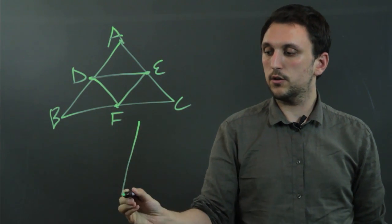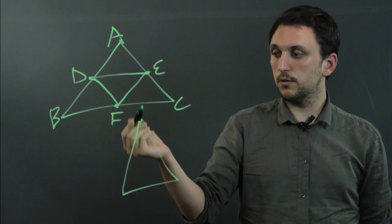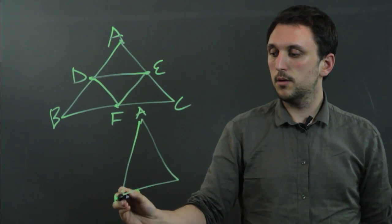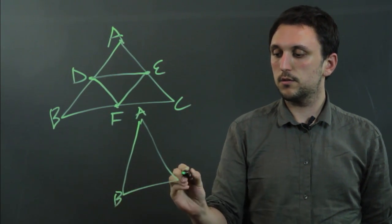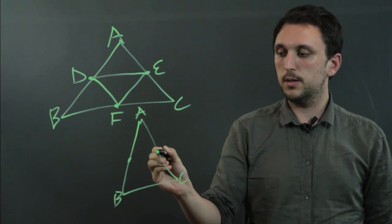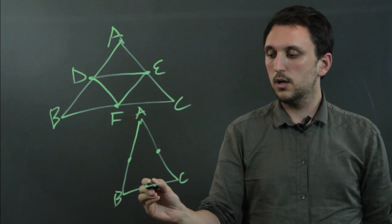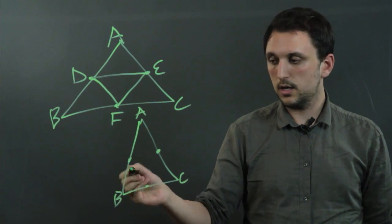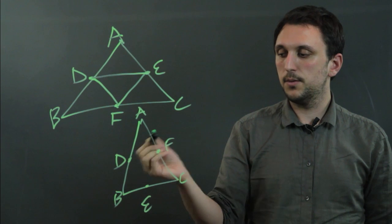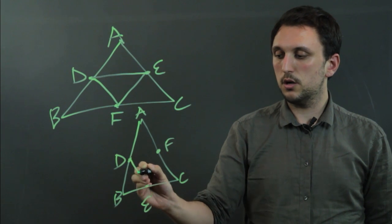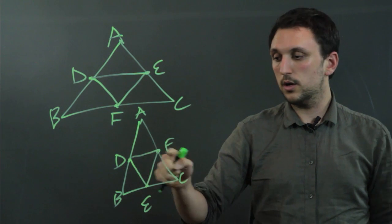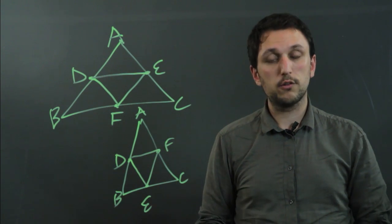We can take a tall skinny triangle and do the same thing, where we say ABC, and we take the midpoint here, and we take the midpoint here, and we take the midpoint here, and call this D, E, and F, and we draw. And again, we have four equal triangles.